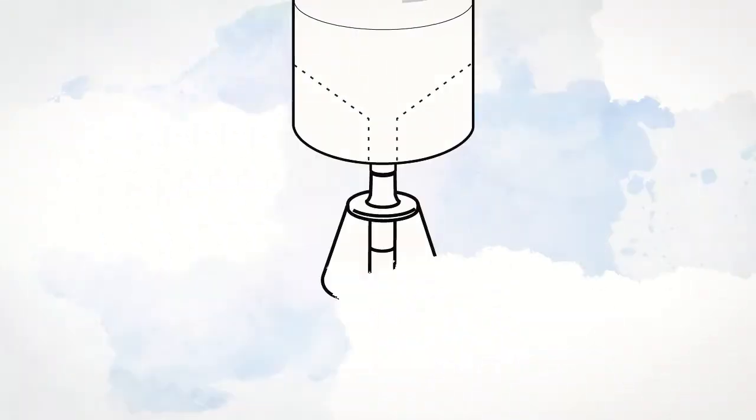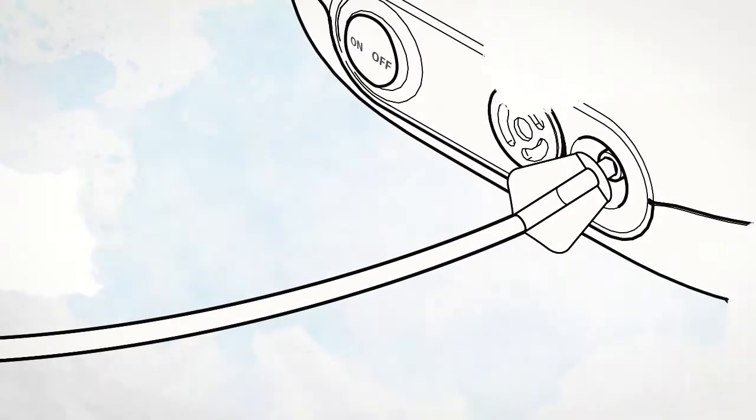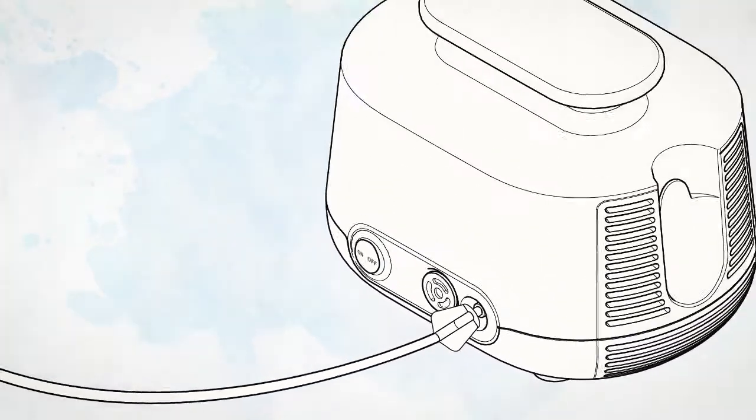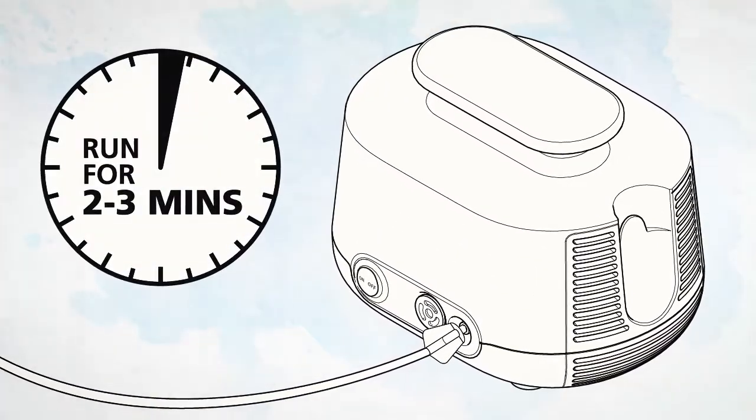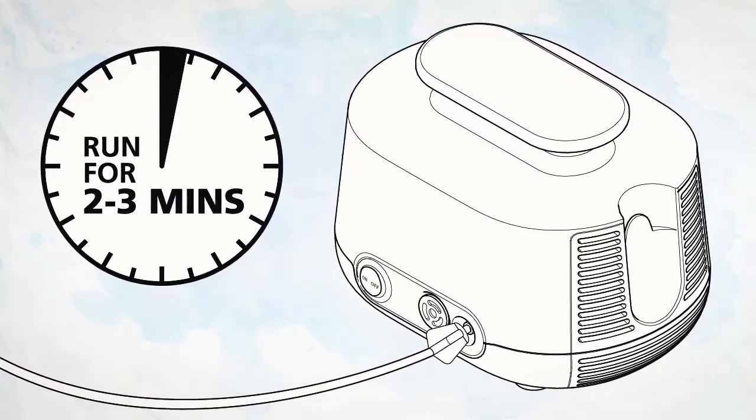To start, disconnect the tubing from the air intake on the bottom of the nebulizer cup. If there is any moisture or condensation in the tubing, let the compressor run with only the tubing attached for 2-3 minutes. The warm air from the compressor will dry out the tubing.